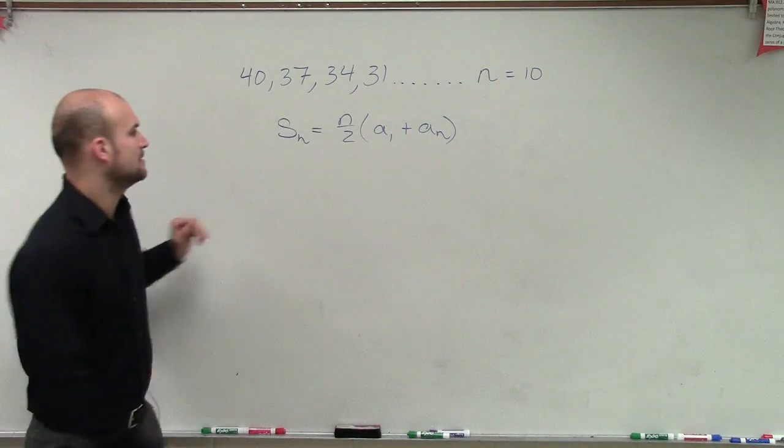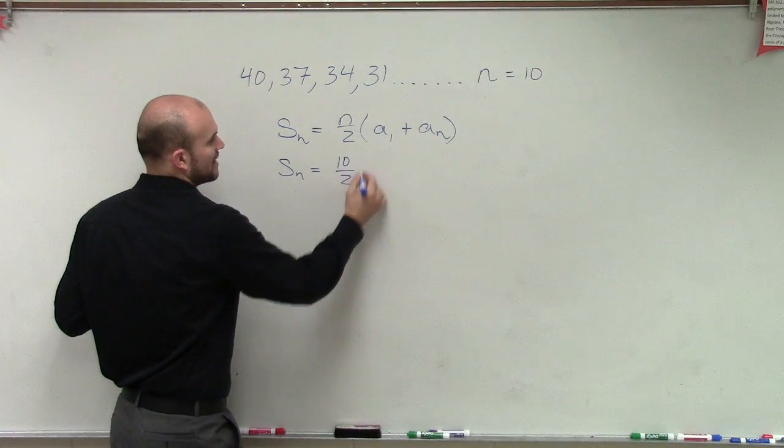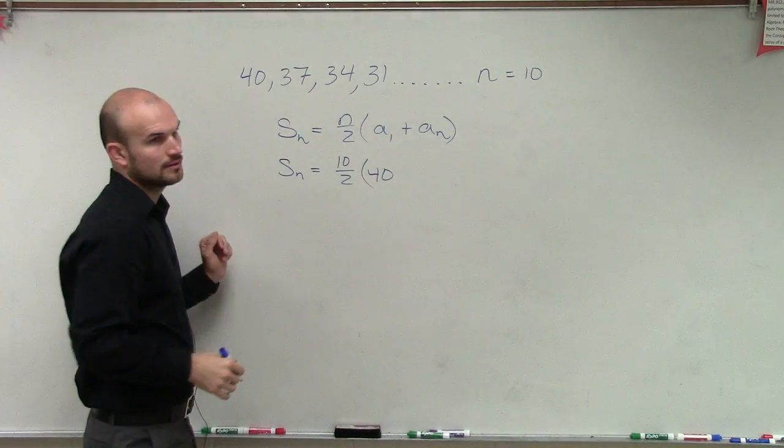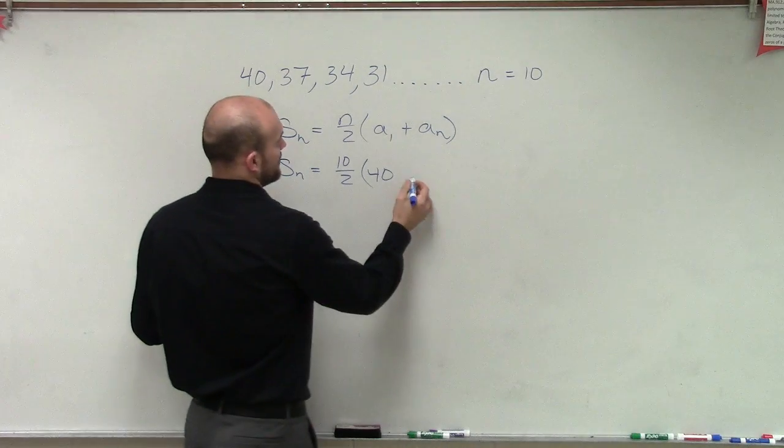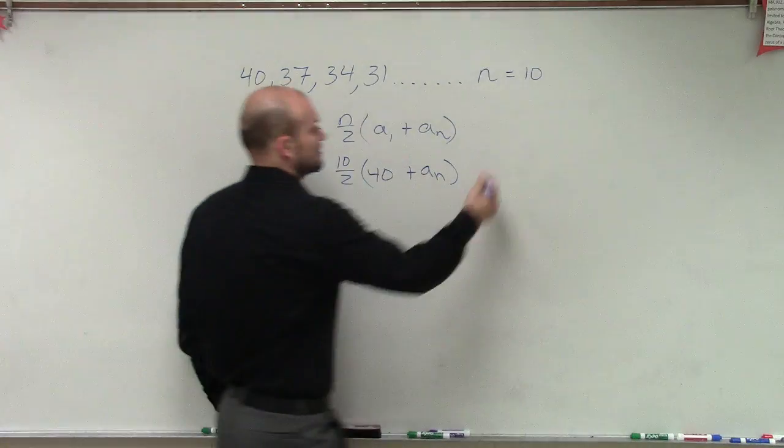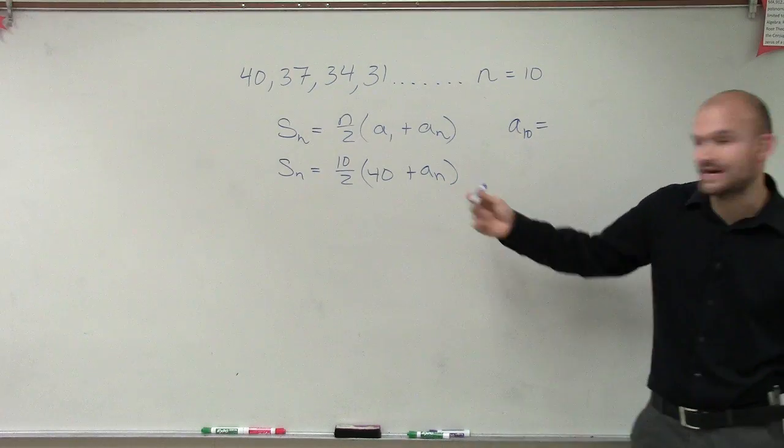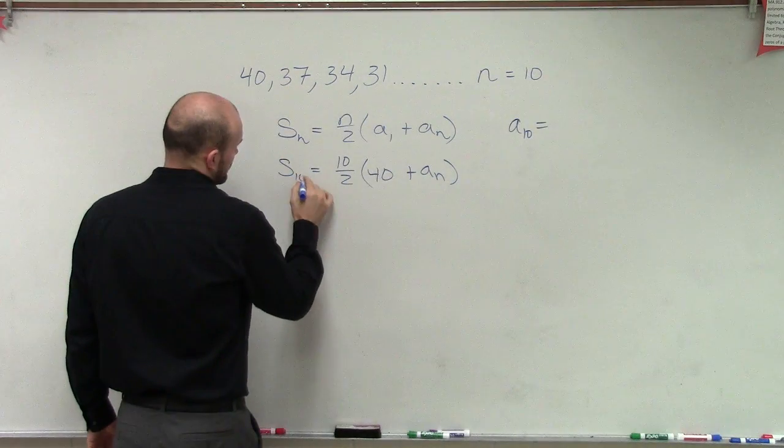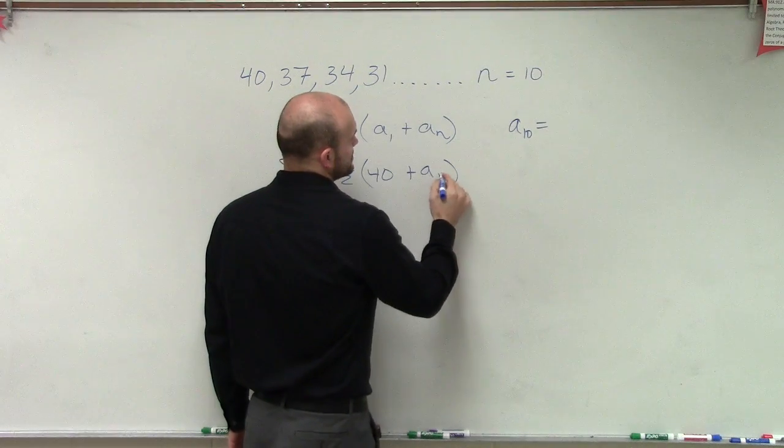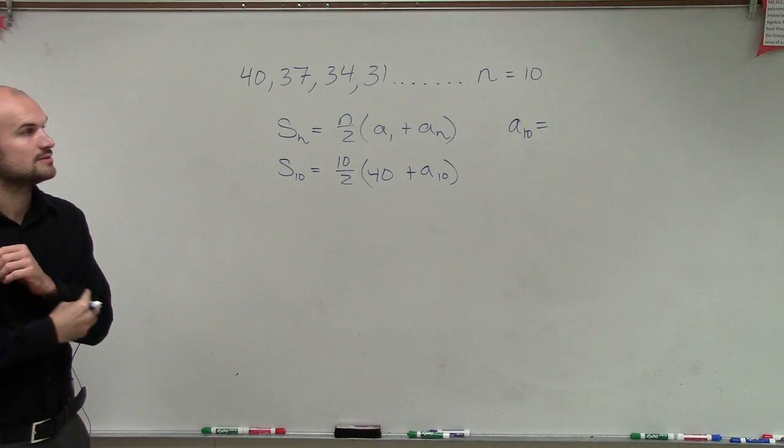So we know what n is, alright? S of 10 equals 10 divided by 2 times a sub 1, which is going to be 40, right? And then plus a sub n. Now we need to figure out what a sub n is. Or I'm sorry, a sub 10, right? Because we're going to be using the 10th term. This should be S of 10, the sum of 10 terms. So we want to figure out now what is a sub 10.